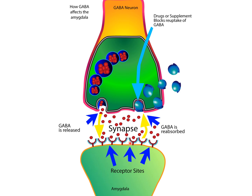GABA is also reabsorbed and recycled by what's called a GABA reuptake pump, similar to the serotonin reuptake pump. This reuptake pump pumps GABA back into the presynaptic neuron, which is the GABA neuron.